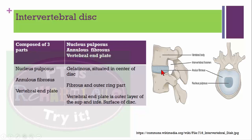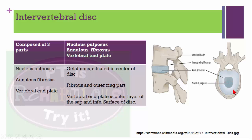The intervertebral disc is composed of three parts: nucleus pulposus, annulus fibrosus, and end plate. The nucleus pulposus is the inner part of the vertebral disc and is a gelatinous material situated inside the disc. The annulus fibrosus is the outer ring part, and the vertebral end plate is the outer layer of the superior and inferior surface of the disc.